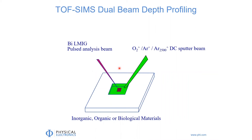Depth profiling is a very important part of SIMS analyses. When we depth profile, we need a beam to etch away sample material. In the Penn State instrument, we have ion guns that allow us to use oxygen, argon, or argon clusters depending on the material. The bismuth liquid metal ion gun is normally used for getting spectroscopy information, although it can be used to etch the sample if desired. Given the beams available to us, we can do depth profiling on inorganic, organic, or biological materials.